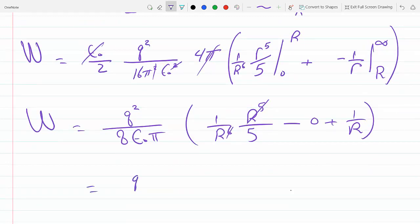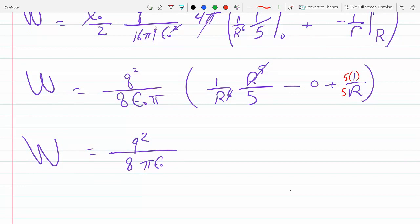We get Q² over 8πε_0, and then we have 1/5R and 1/R. We can multiply this by 5, so we get a common denominator, giving us 6 over 5R.